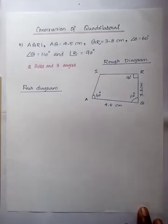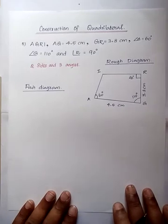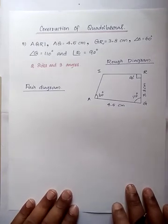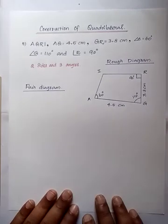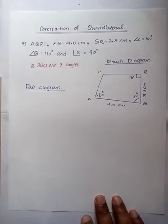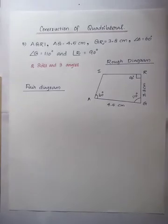The fifth model is two sides and three angles are given. The question is quadrilateral AGRI, where AG equals 4.5 cm, GR equals 3.8 cm, angle A is 60 degrees, angle G is 110 degrees, and angle R is 90 degrees.